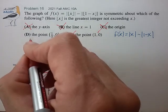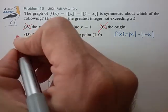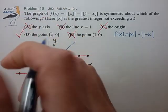And we do notice that it does satisfy symmetry about the point (1/2, 0), so that, in fact, is the correct answer for choice D.